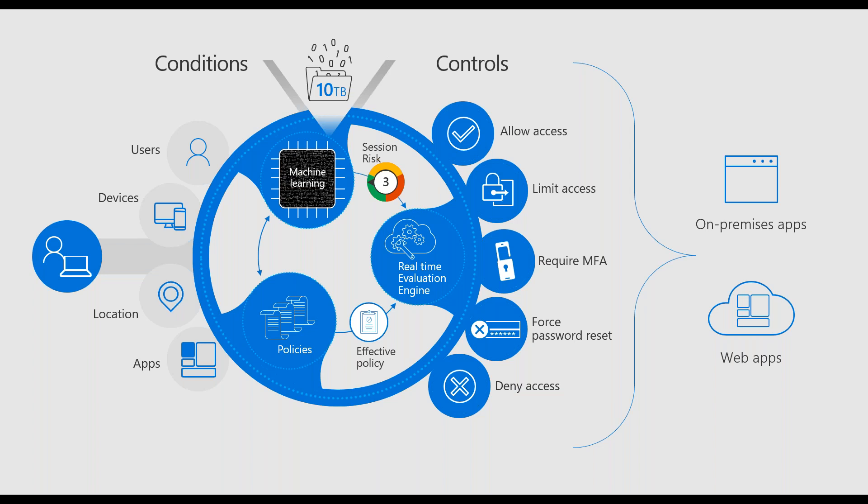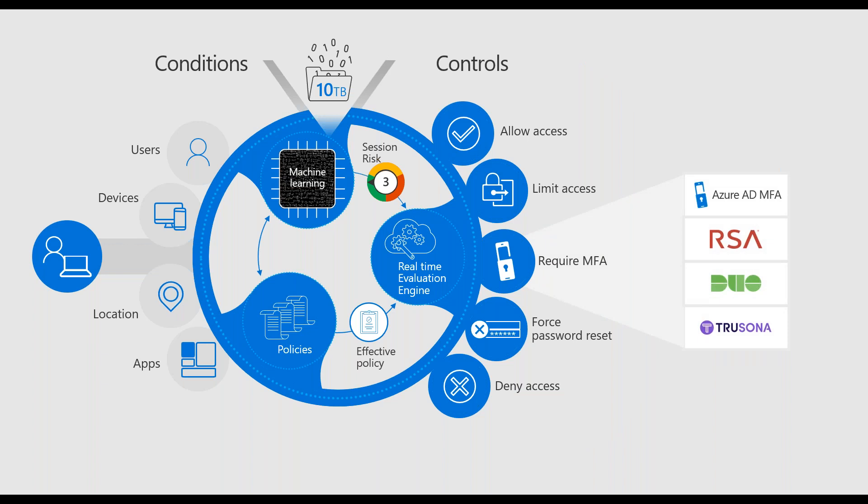All of these conditional access policies also apply to your on-premises applications using AppProxy. That scenario where the customer had people in trucks — they were able to say that to get to the time card app, users had to come from an Intune managed device in compliance, using a managed browser so they weren't exposing data anywhere else, and they had to do MFA before actually accessing anything. You can do all of that to your on-prem apps without making any changes to the on-prem app. Regarding MFA providers: we support Azure AD MFA natively, but we also support RSA, Duo, and Trusona as MFA providers.